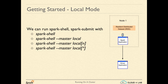We can specify the number of threads to use in square brackets after local. For example, spark-shell --master local[2] is good enough. A better way is to use asterisk instead of specifying the number of threads explicitly. local[*] uses as many threads as the number of processors available to the Java Virtual Machine. When we do not provide any master option on the command line, it defaults to local[*].